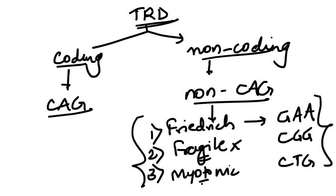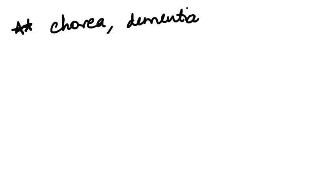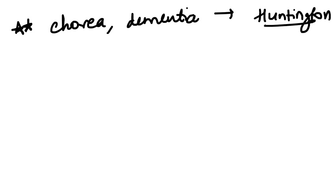Now for important clinical features: if a patient with a trinucleotide repeat disorder presents with chorea and dementia, the diagnosis is Huntington's disease. The catch points to diagnose Huntington's disease clinically are chorea and dementia.